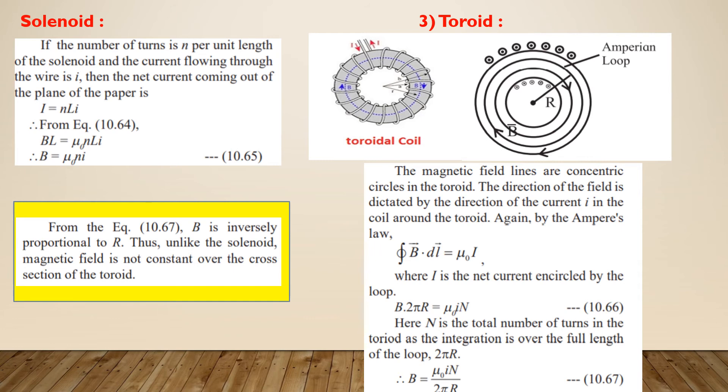Similarly, we can apply Ampere's law to determine the magnetic field inside a toroid. A toroid is a common electronic component of a hollow circular ring usually made up of powdered iron on which a number of turns of copper wire are wound.